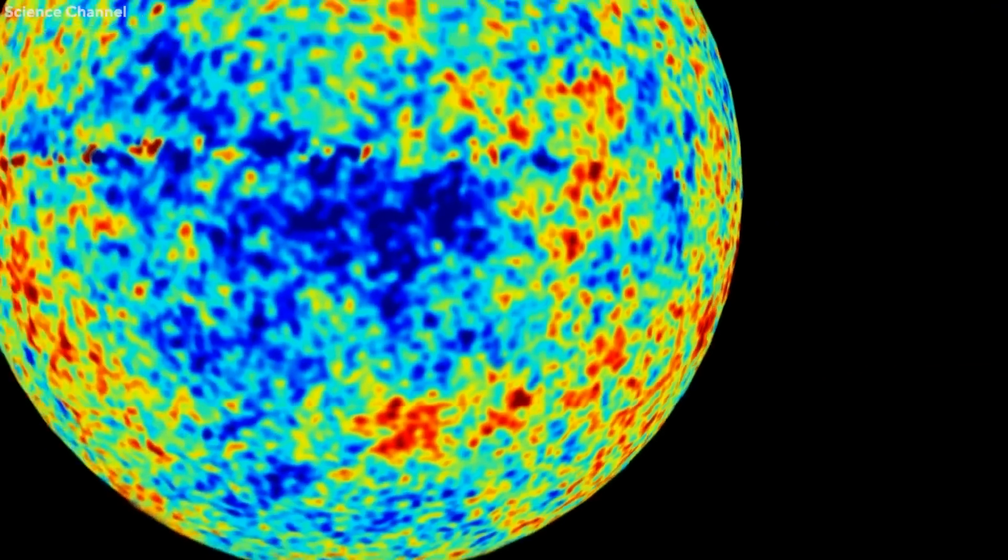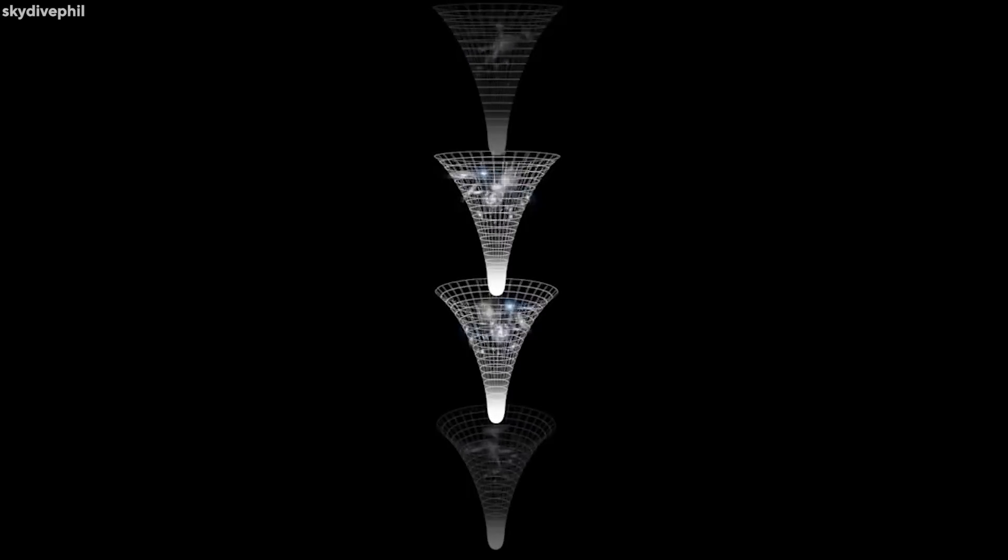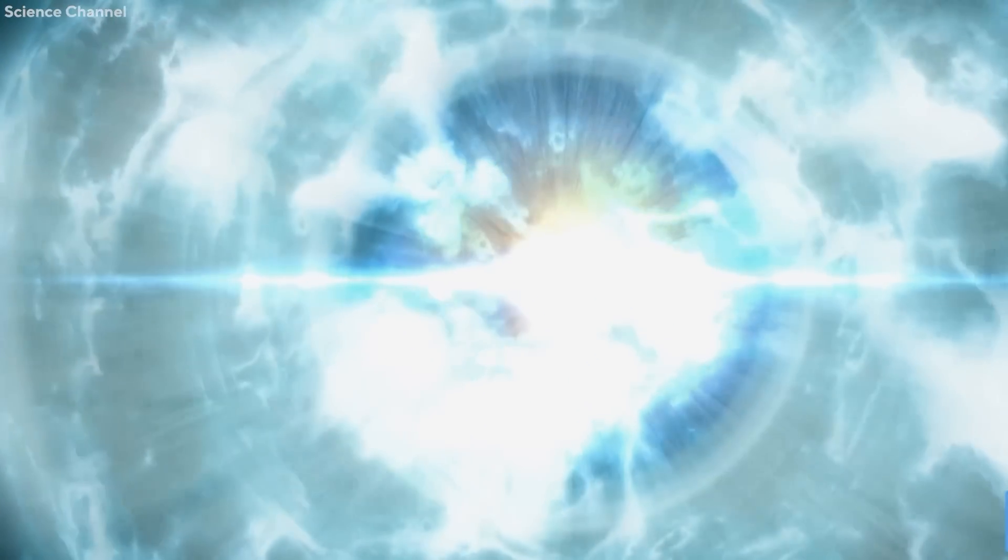Penrose reported that he had discovered evidence based on concentric circles which he found while studying both pre-existing and current versions of the cosmic microwave background, or CMB. He stated that from his observation, he determined that an earlier universe had quite possibly existed before the Big Bang that created our own.